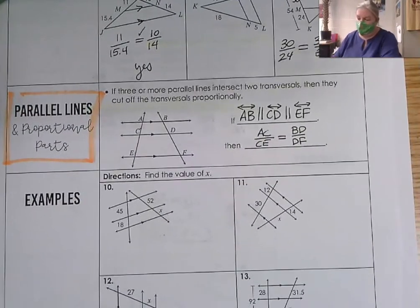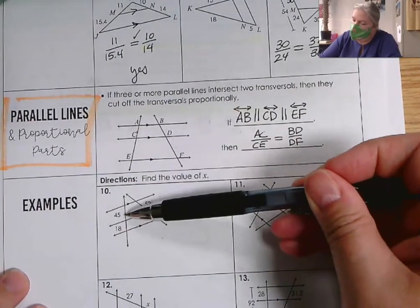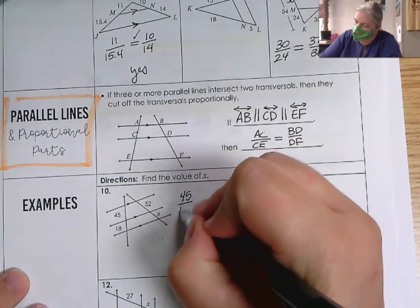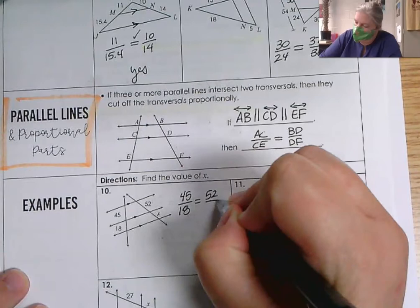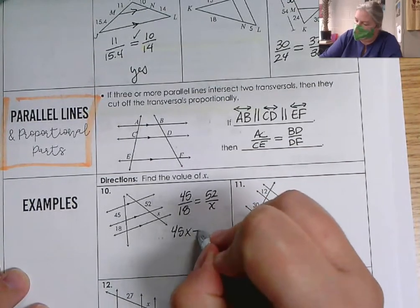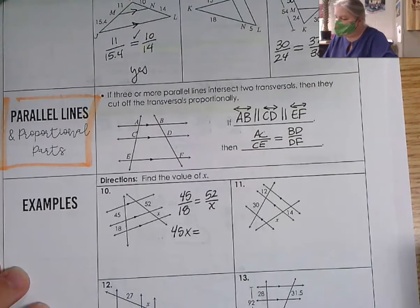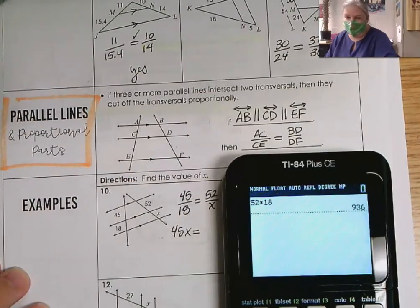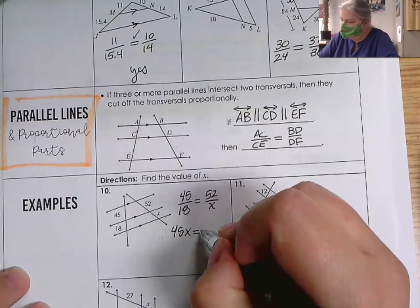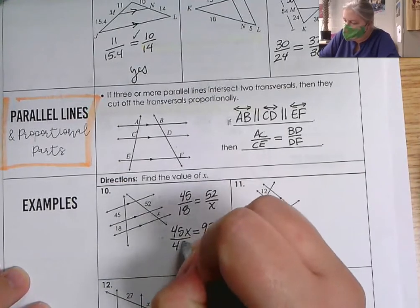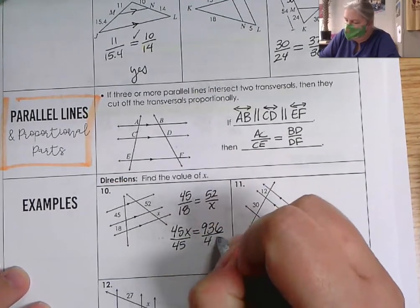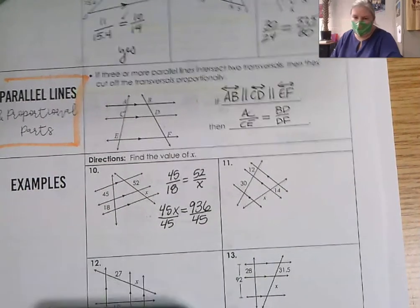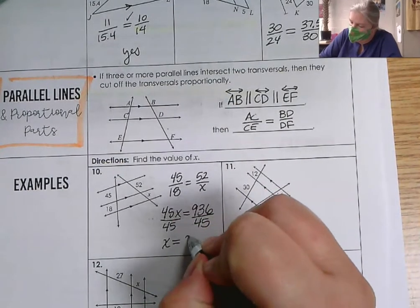Number 10: find the value of X. I'm going to say 45 over 18 equals 52 over X. Cross multiplying gives 45X equals 52 times 18. Dividing both sides by 45 — that's probably not going to be clean — gives X equals 20.8.